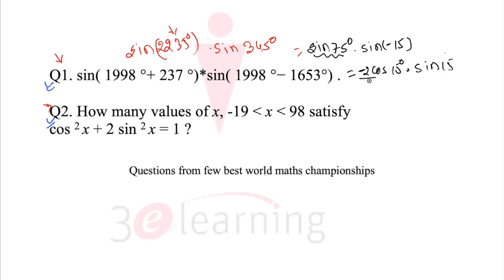Need to multiply by 2, need to divide by 2. So from here we can say minus 1 by 2 into 2 sin 15 into cos 15 is nothing but sin 30 degrees. Which is nothing but 1 by 2 into 1 by 2. So the answer of this question is nothing but minus 1 by 4.